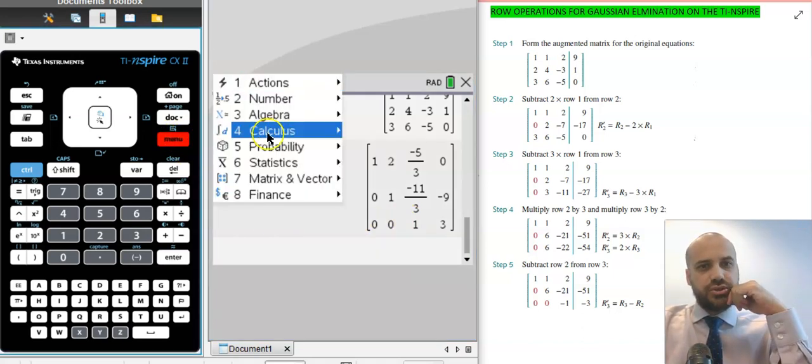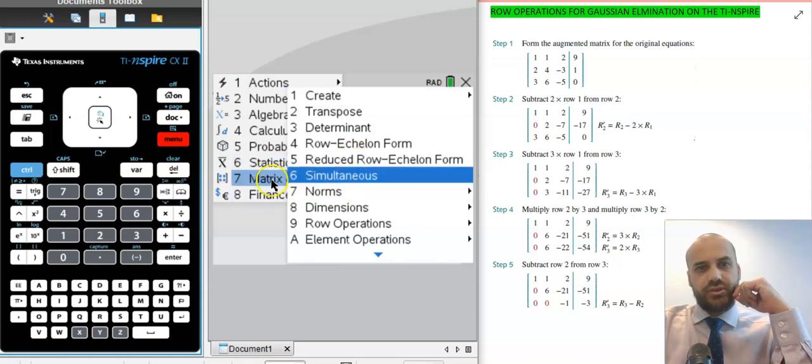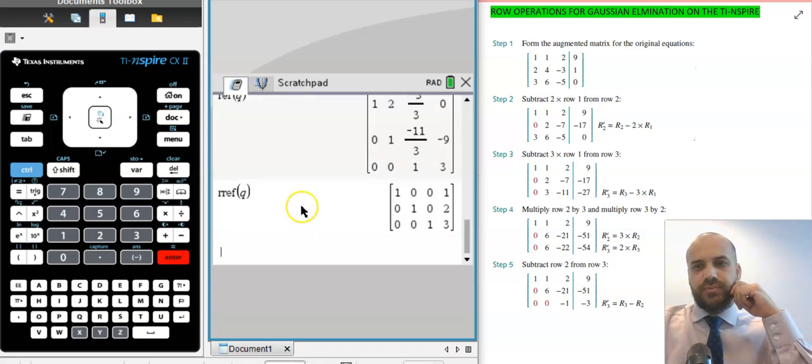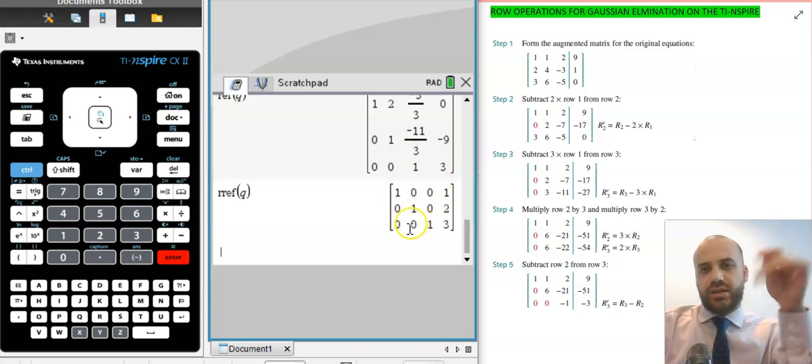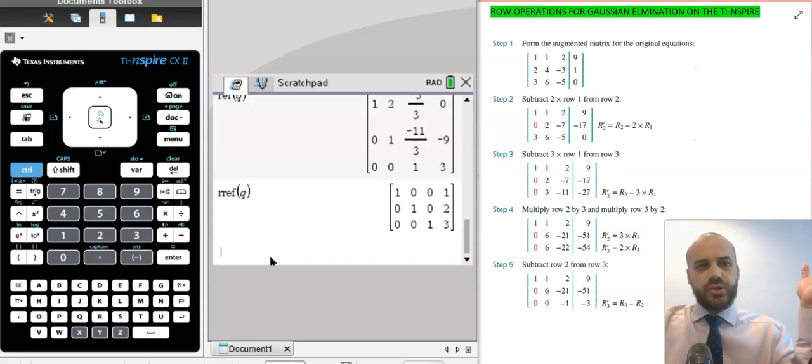We can also do reduced row echelon form. Just get into matrix here. Reduced row echelon of matrix Q, and then we get this nice, neat little thing here, which tells us that Z equals three, Y equals two, and X equals one, because all of these other things are zeros. And so that's a very, very fast way of getting to the answer of this series of equations, system of equations. That's it. All done.